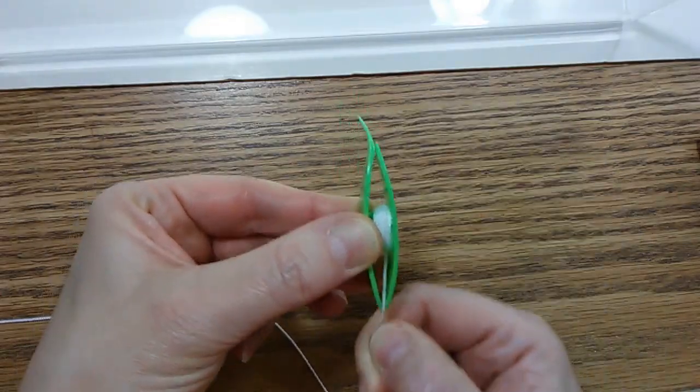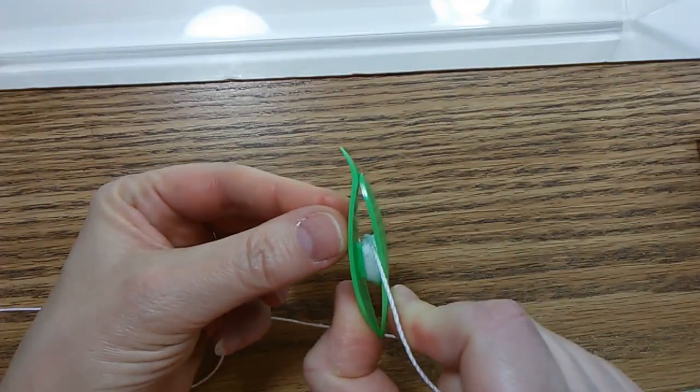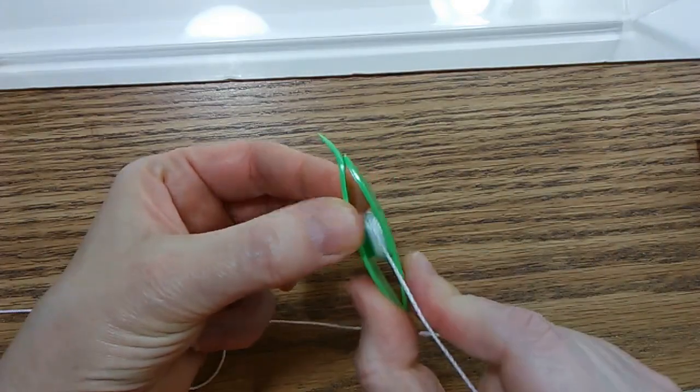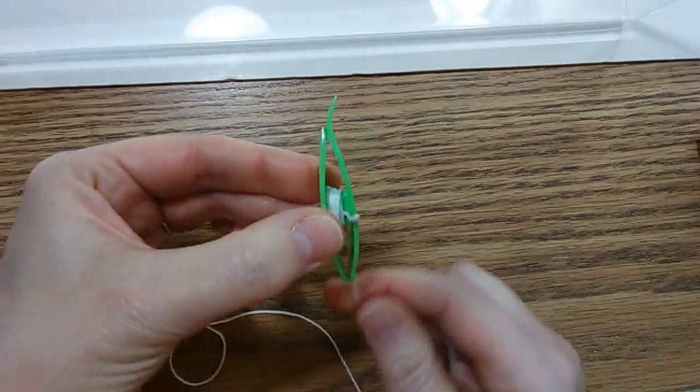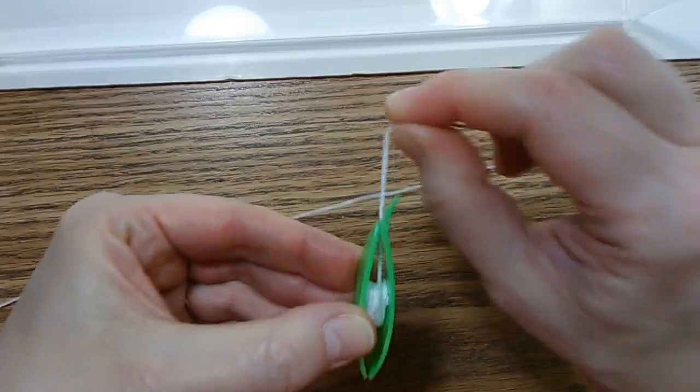You just continue winding and if you can see, this is starting to build up the thread on one side. I turn it over and start winding over the other side, hiding the end as I do it.